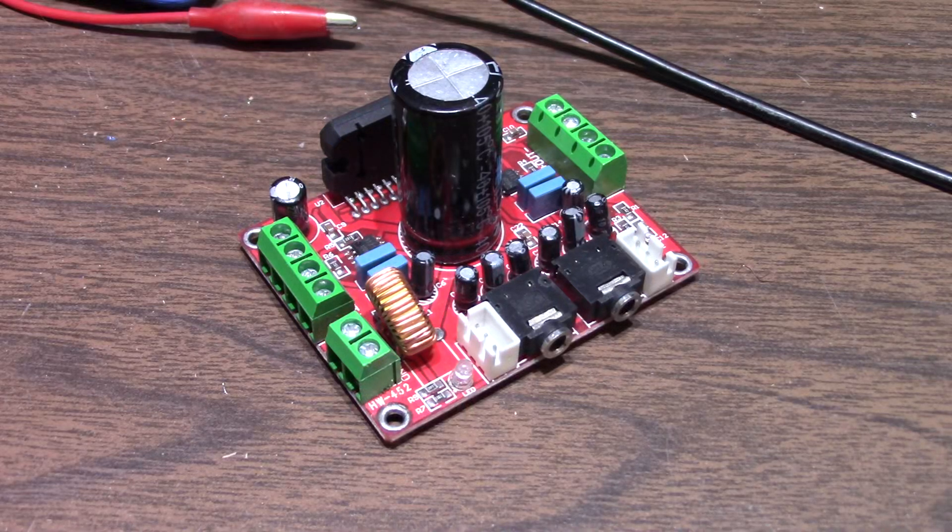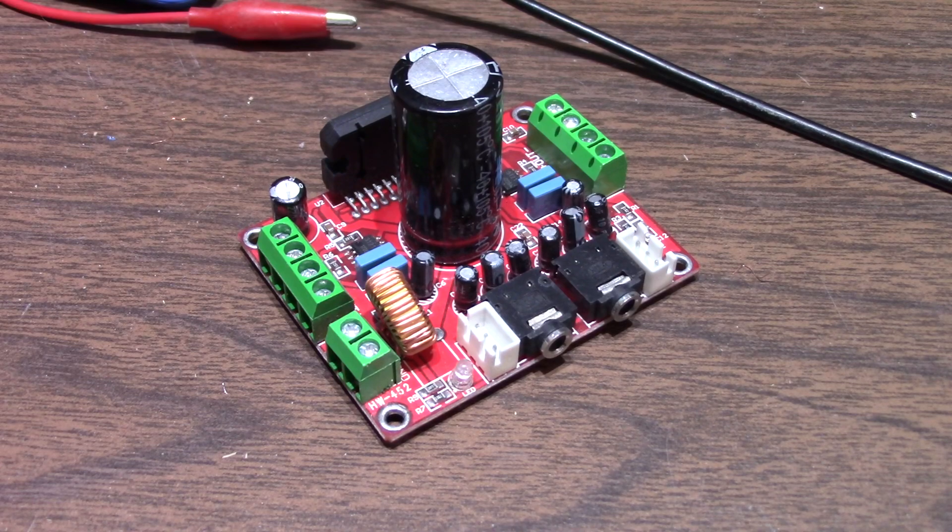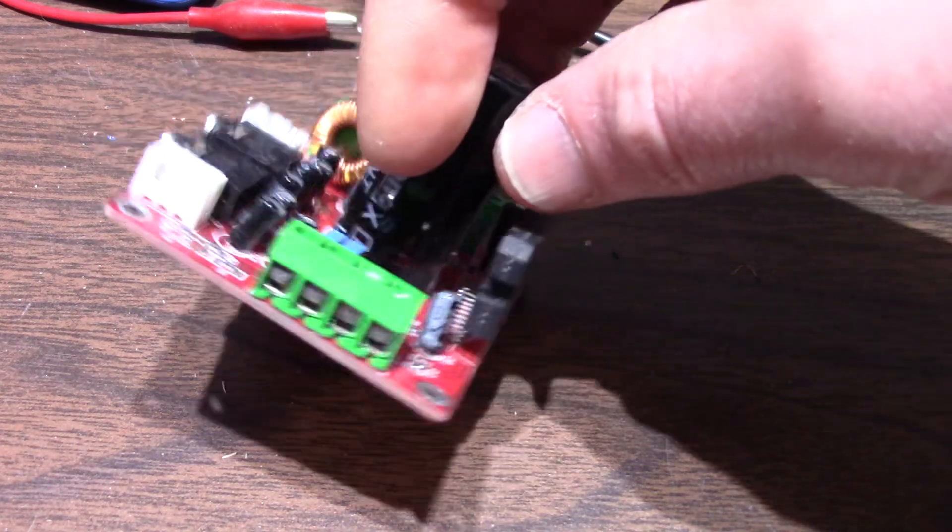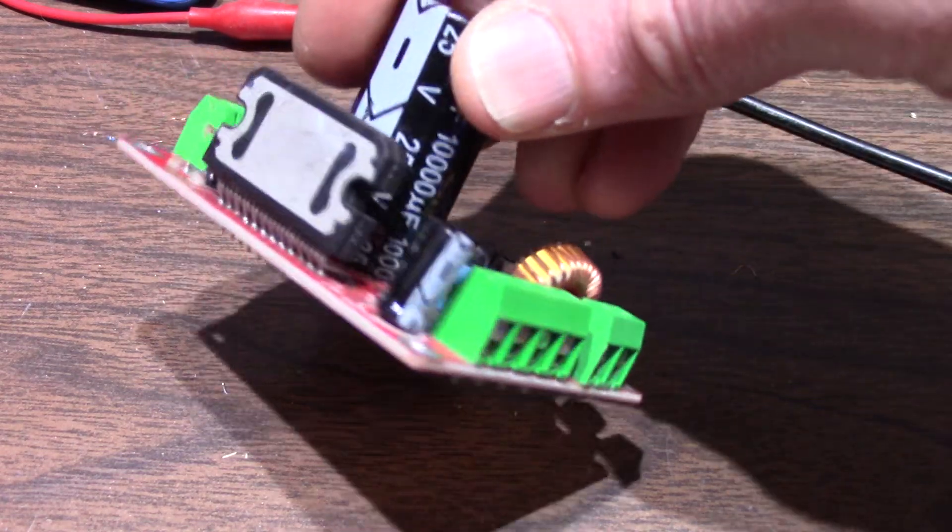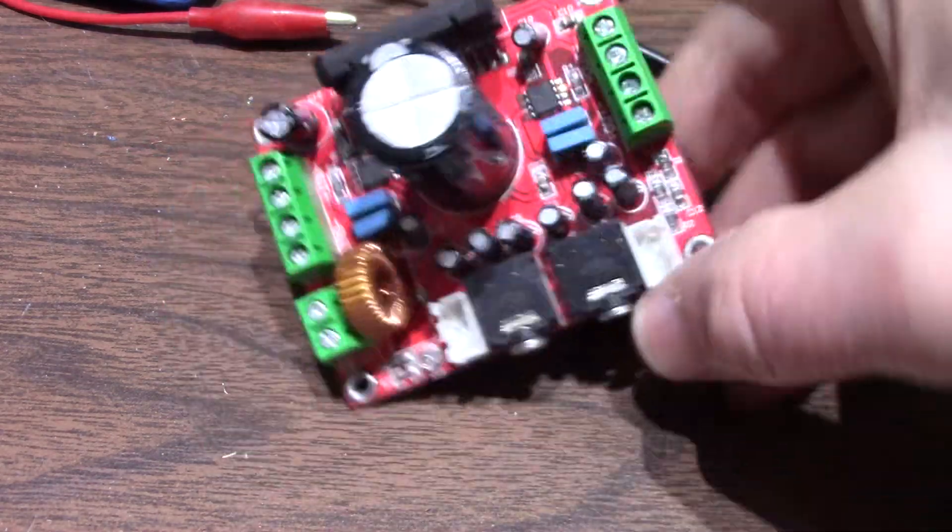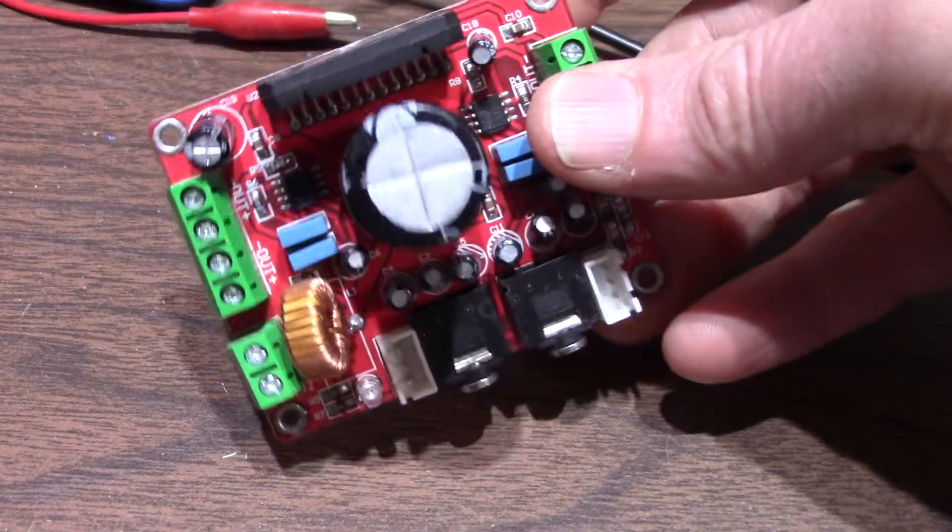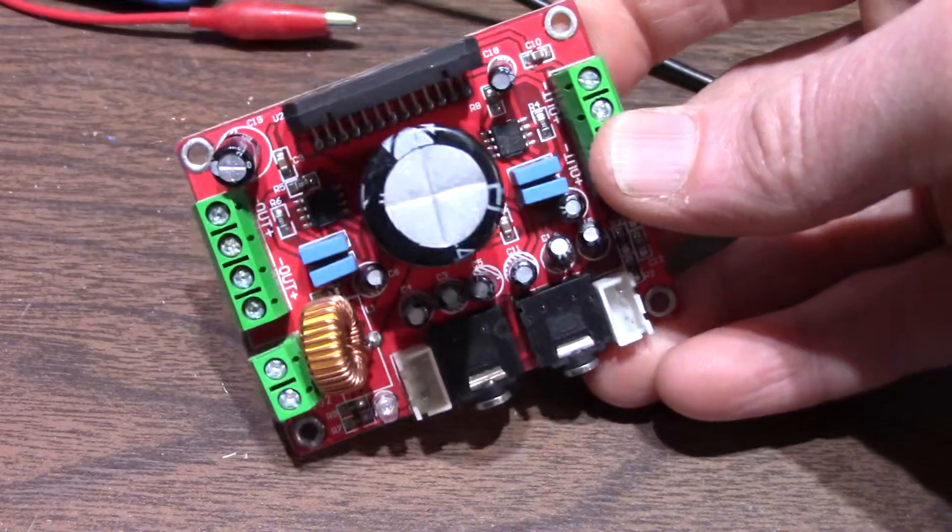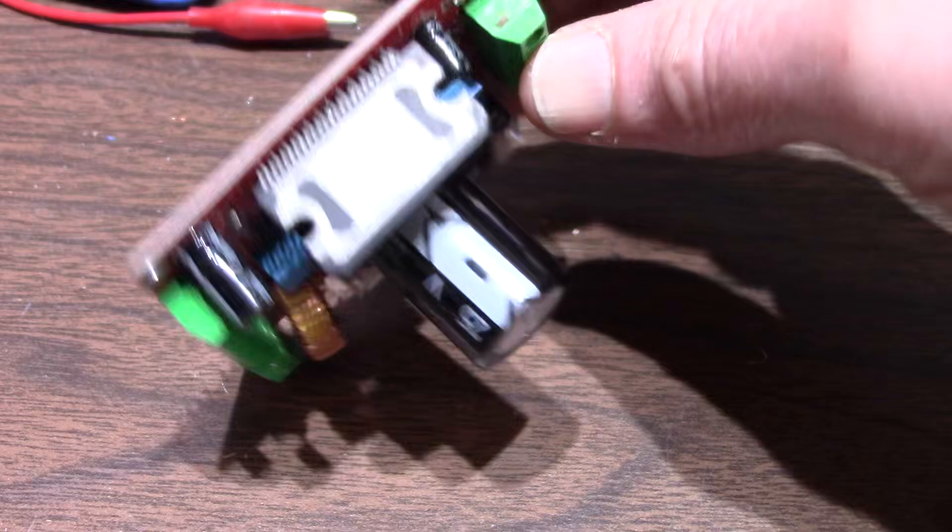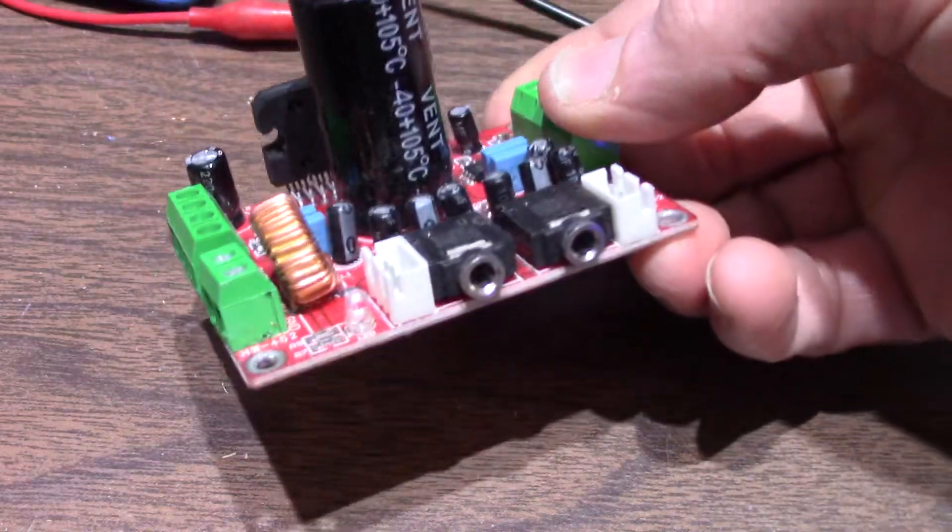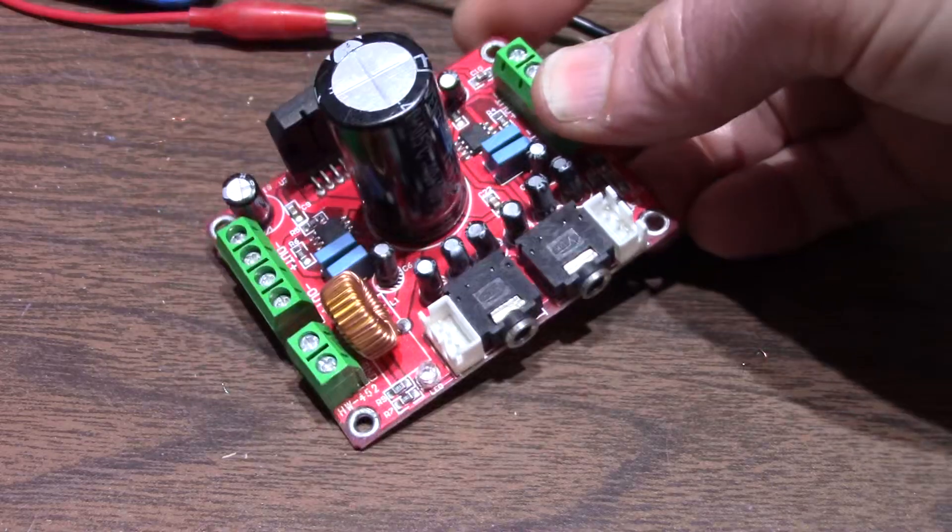Greetings everyone! Today on the bench I have the TDA7850 4 channel amplifier. It's one of these 12 volt supply type car stereo chips, and they put it on a board here. Two inputs, two channels each. One of these Chinese budget boards off of eBay.